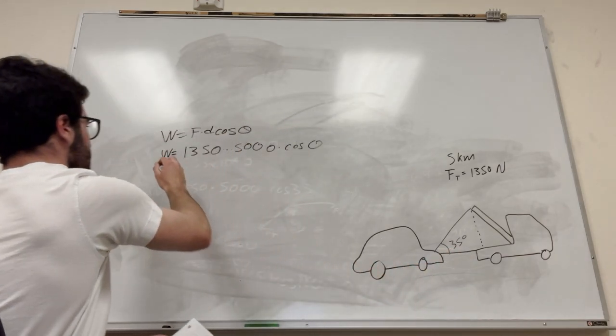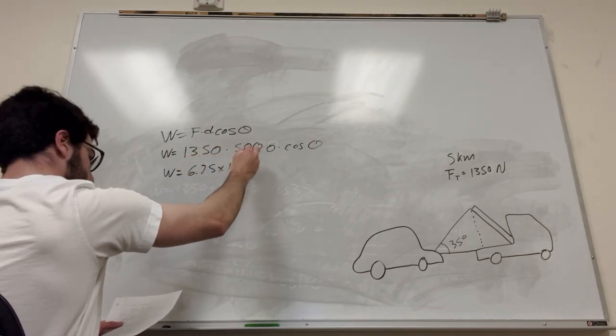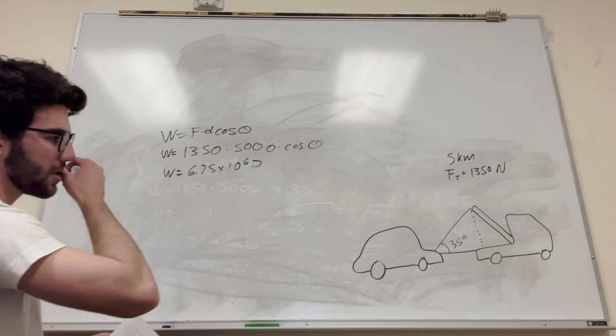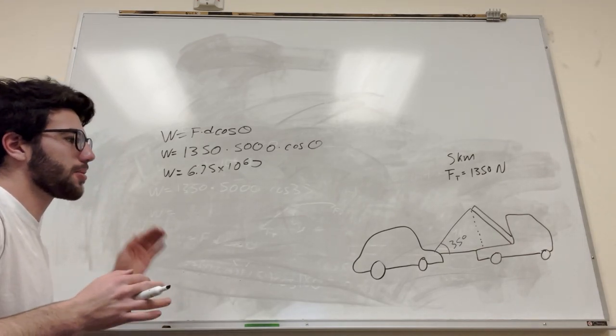So if you do this, this is going to be 6.75 times 10 to the 6 joules. That's how much work it takes on the cable in the first system where it's horizontal.